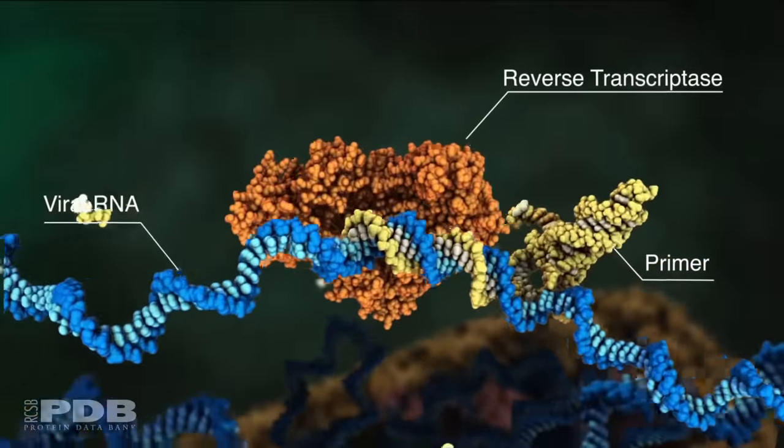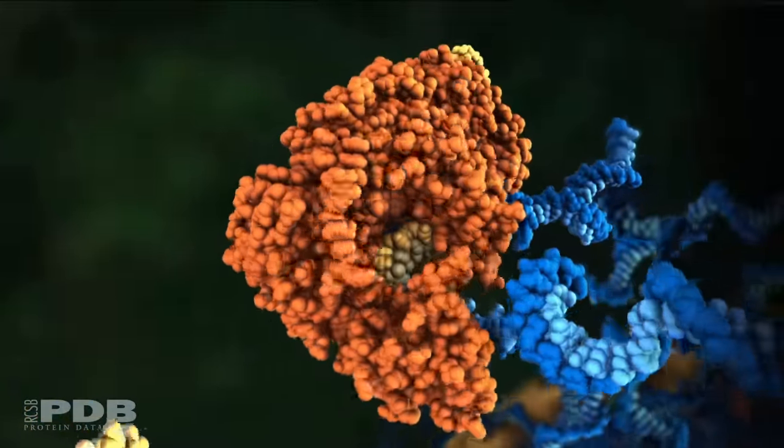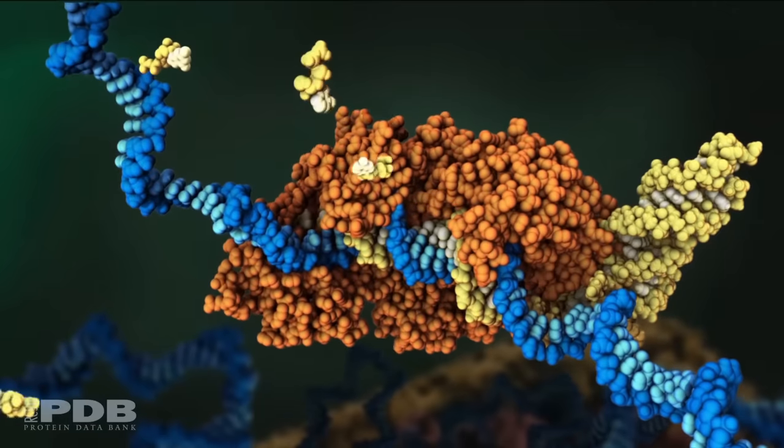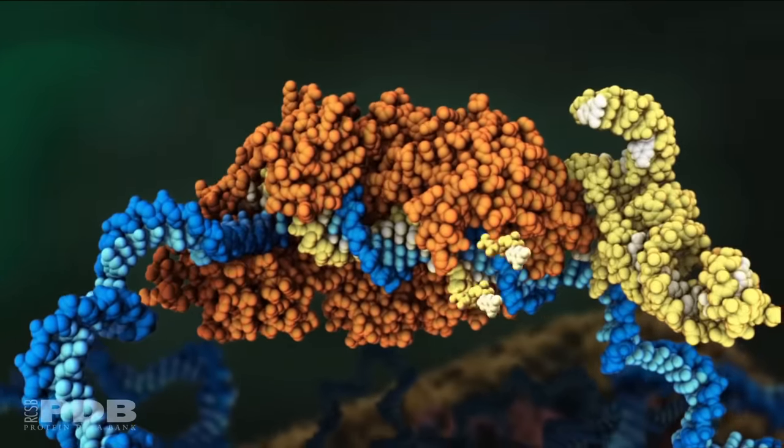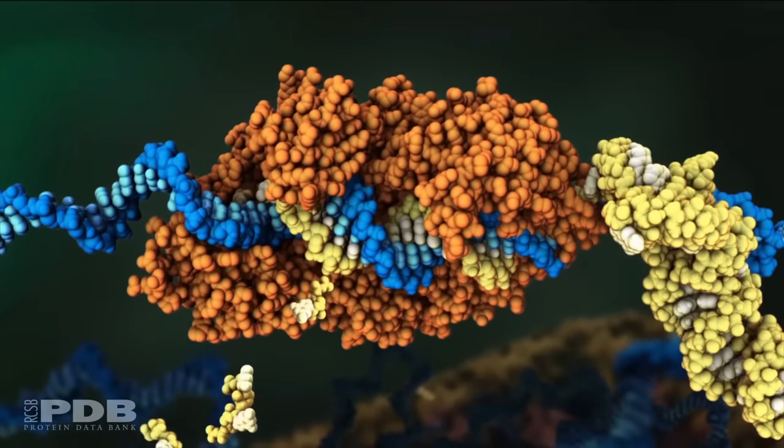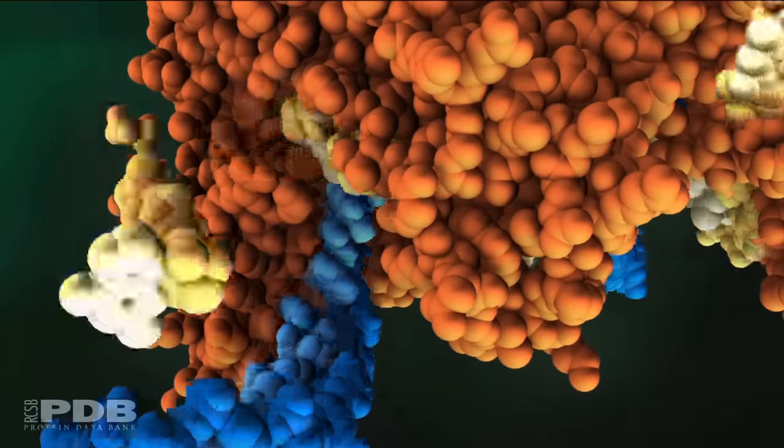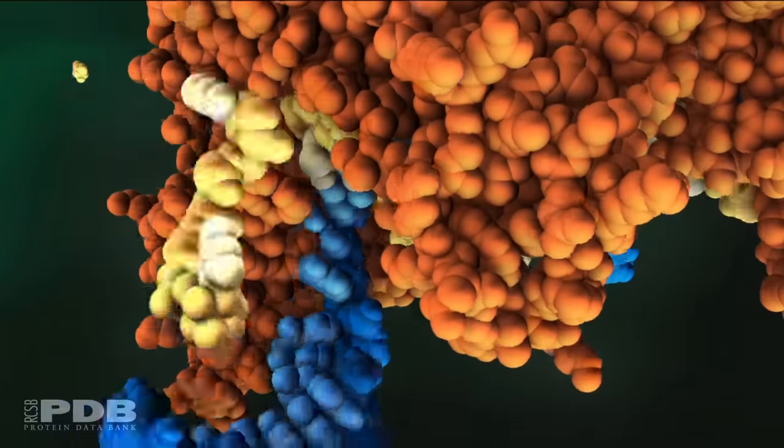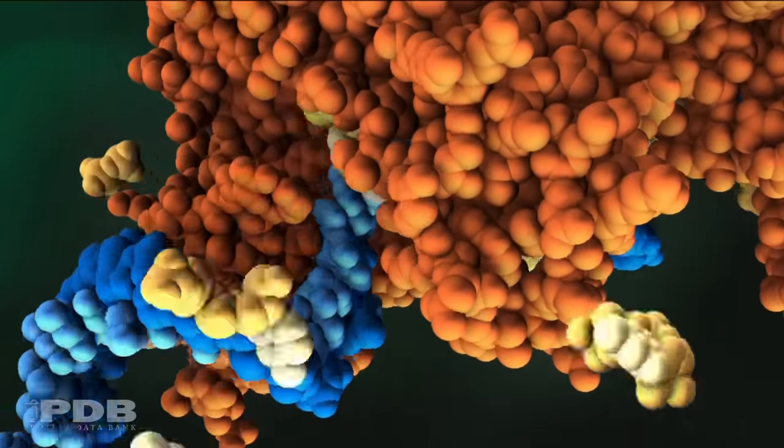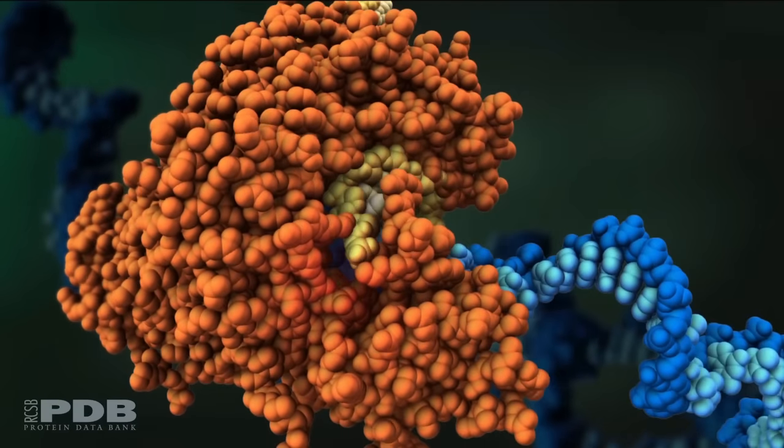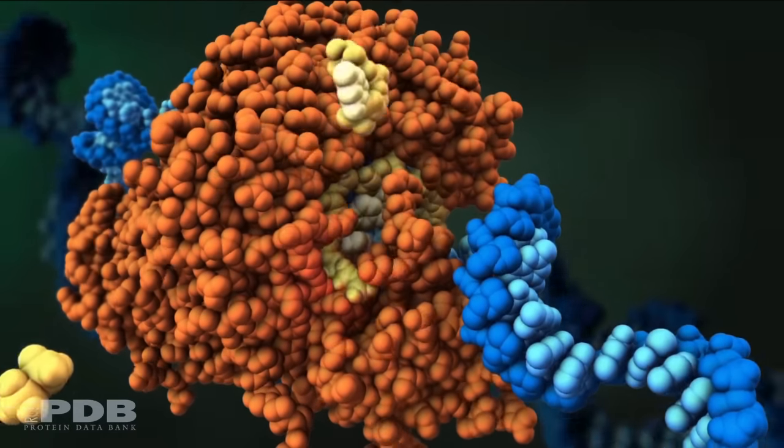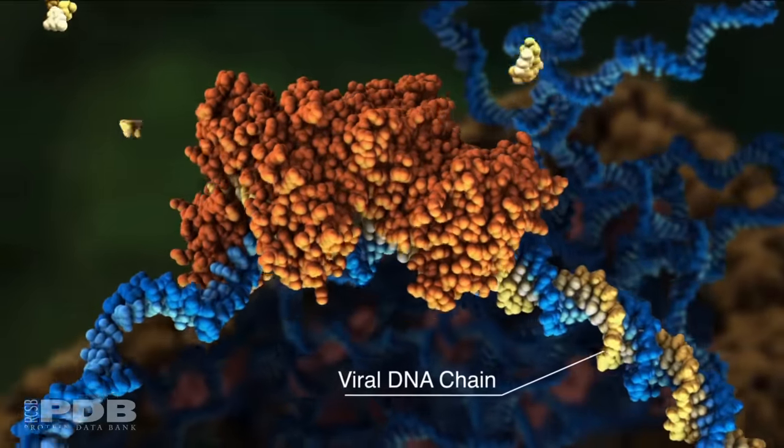The first enzyme, HIV reverse transcriptase, copies the viral RNA genome by combining individual host nucleotides to build a complementary DNA strand. When reverse transcriptase finishes this strand, it will replace the original viral RNA with another DNA strand, forming a DNA double helix.